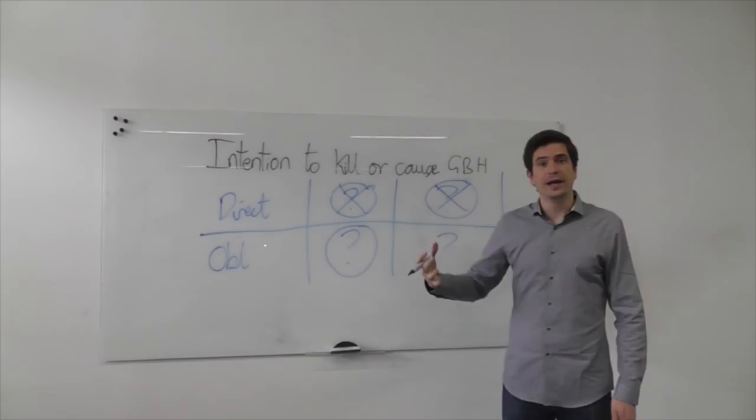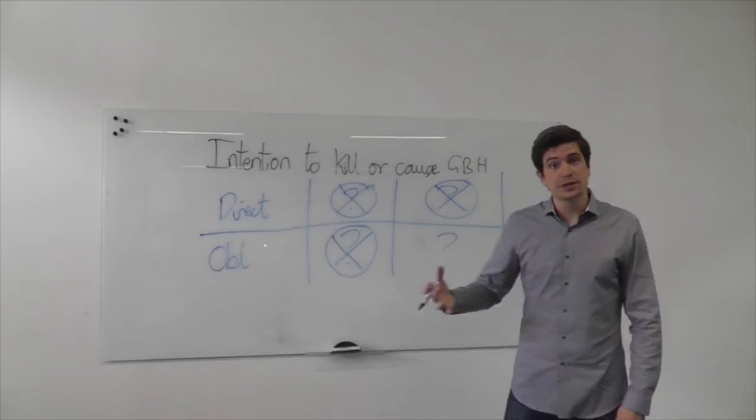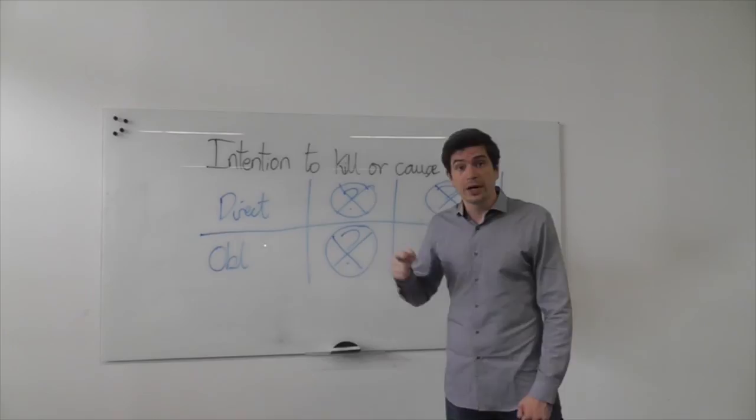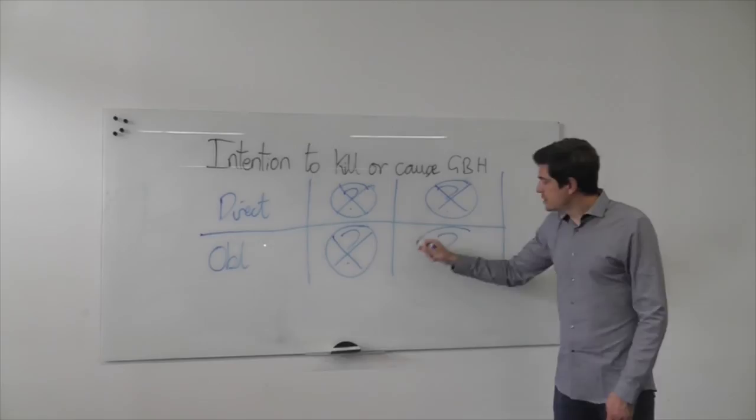Then we have to look, is there an oblique intention maybe to kill? Does he foresee death as a virtual certainty? And again, the answer on the facts was no, he didn't. He foresaw a chance of the death happening, but he absolutely hoped that it wouldn't. And so therefore there doesn't look like there's an oblique intention. He not only hoped that it wouldn't, but he foresaw a chance that it might not result in death. Therefore no foresight of a virtual certainty.